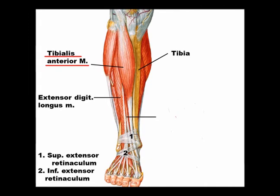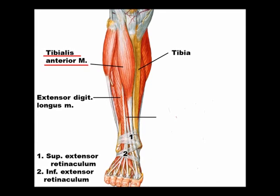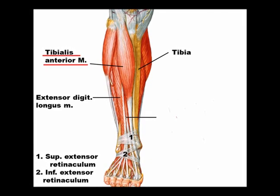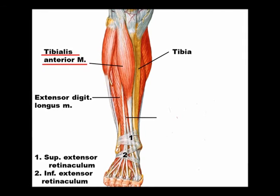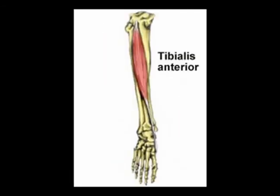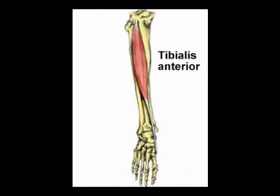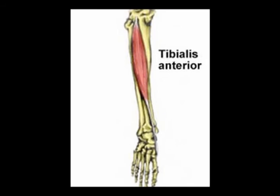Its concentric action — first of all, it is the strongest ankle dorsiflexor in the body. So its concentric action is dorsiflexion, and it also performs inversion. So again, this is the tibialis anterior muscle: the strongest ankle dorsiflexor muscle, which also performs inversion.